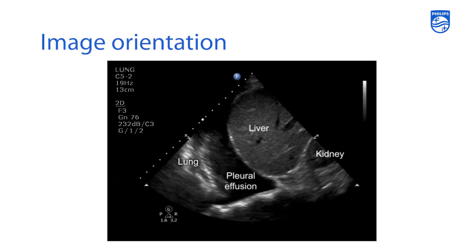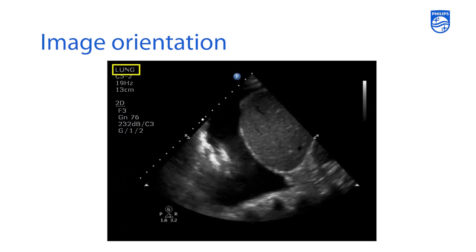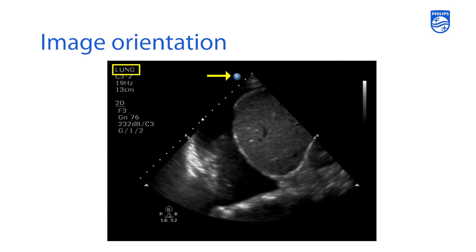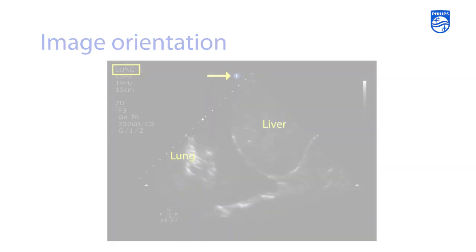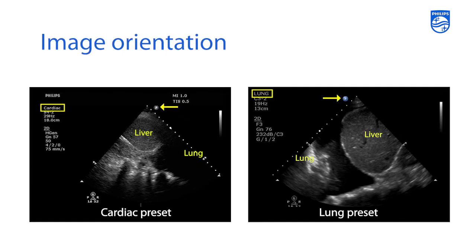When the image is acquired under a pulmonary preset, the orientation marker moves to the left-hand side of the screen, so the lung appears on the left and the liver on the right. The only reason for the difference is that the cardiac preset flips the image 180 degrees compared to abdominal or lung presets. The orientation of structures may differ depending on which preset the exam was performed under, so don't be confused by this when reviewing images in the series.